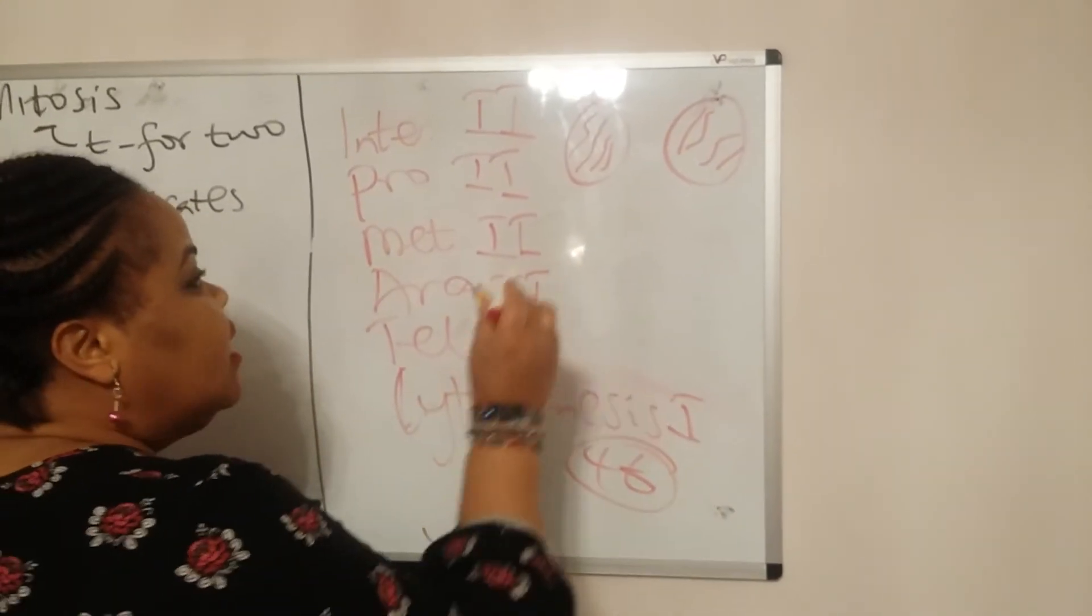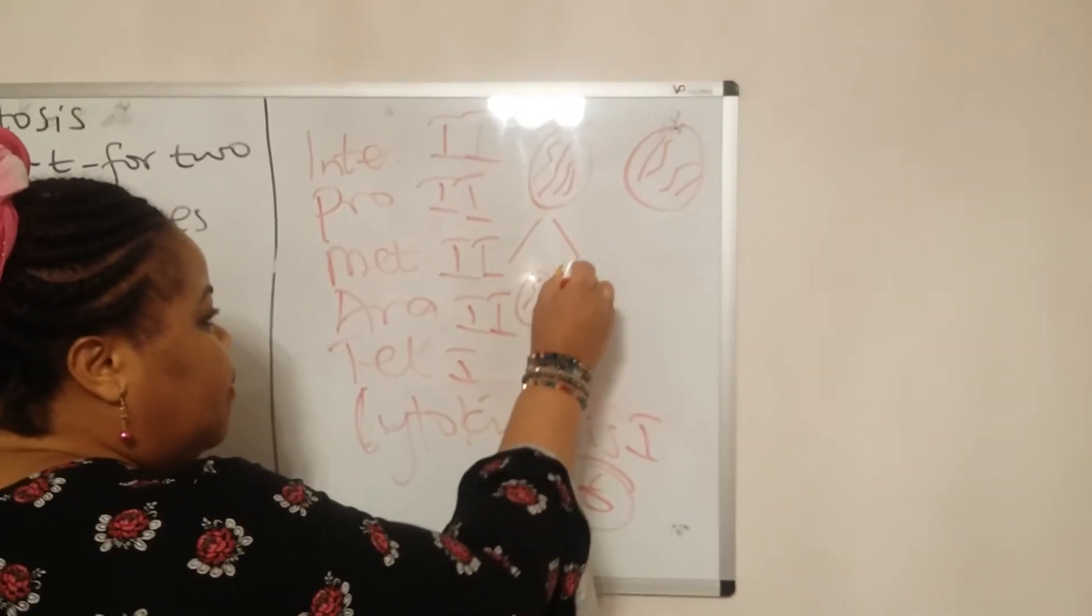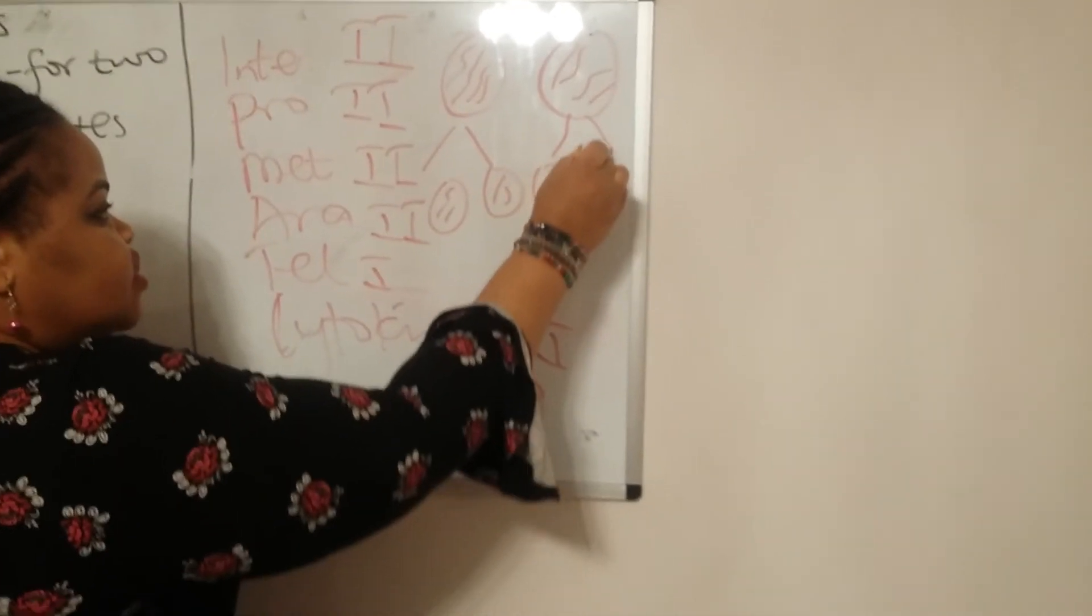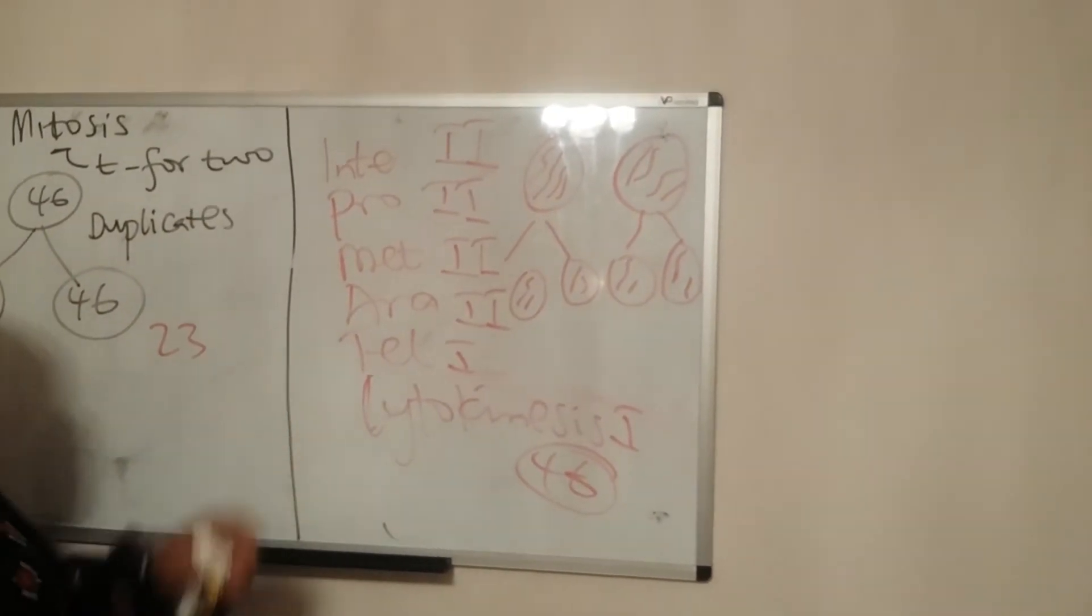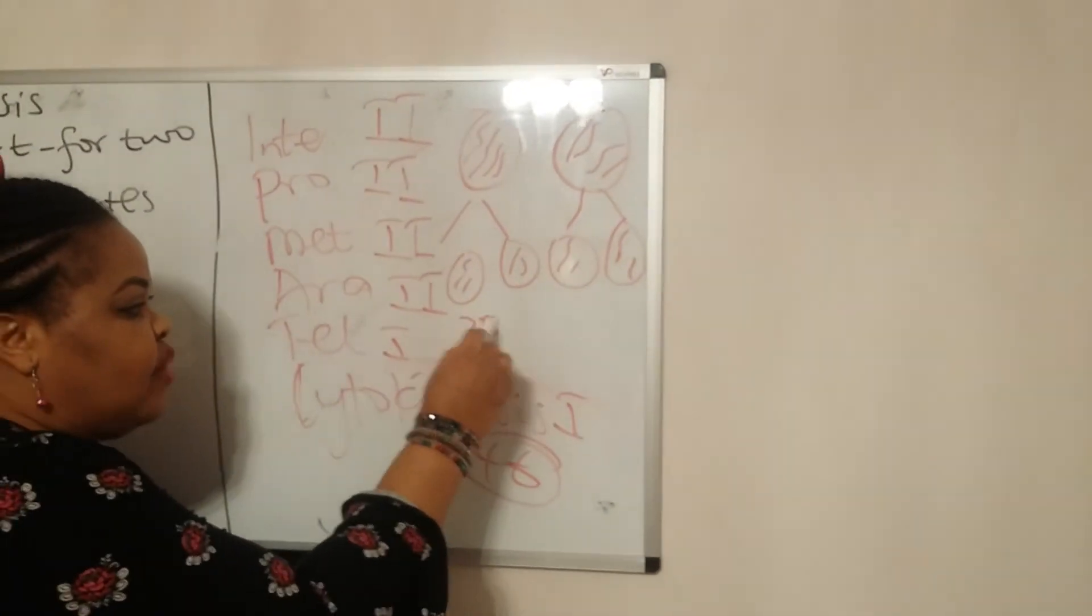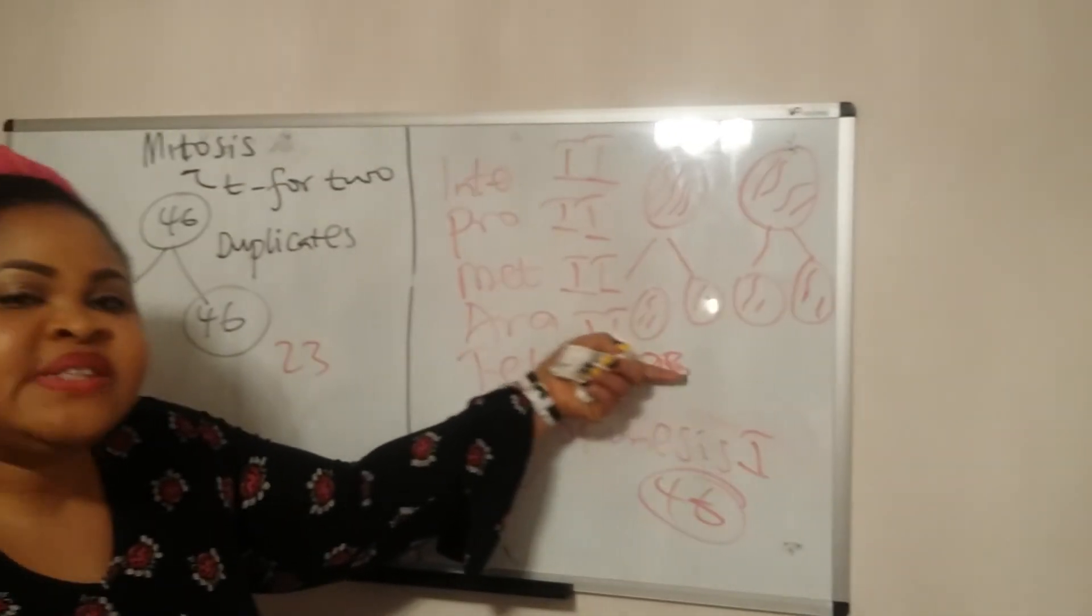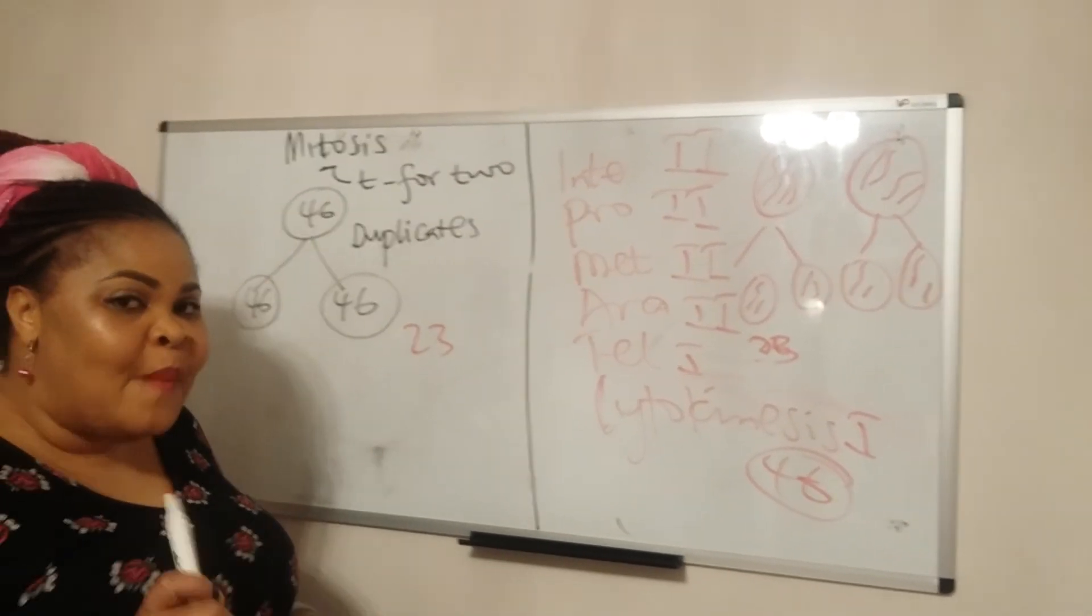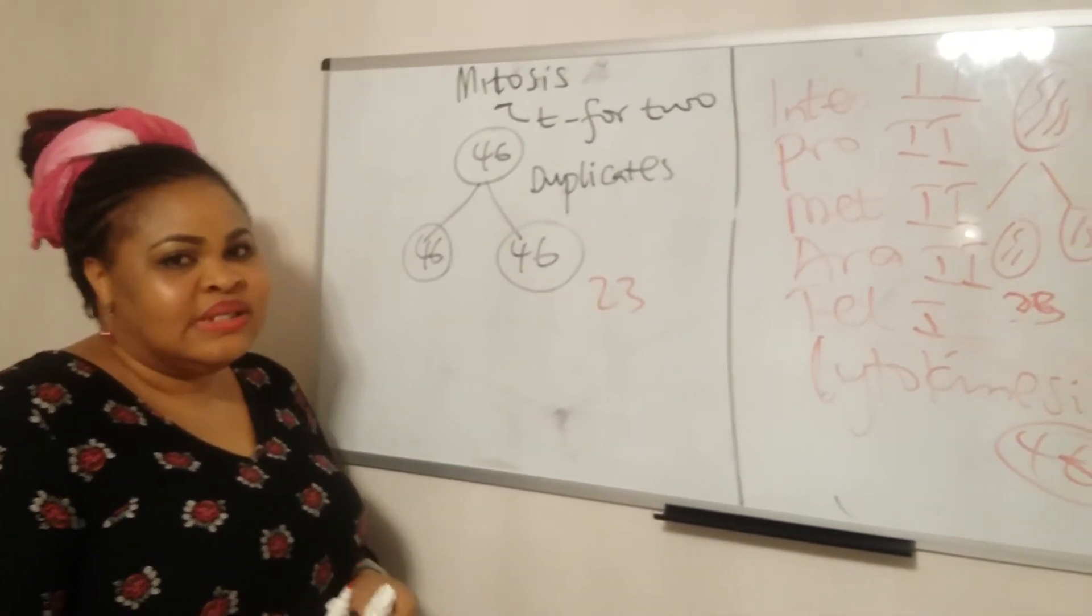When you get to second telophase, each of these cells will split up, and you end up with half the number of chromosomes—23—that started the cell division. I hope that helps you compare mitosis and meiosis.